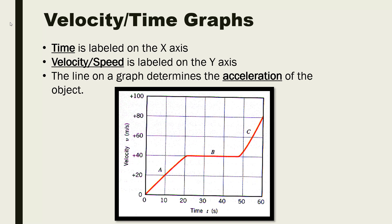Just a reminder: speed is how fast an object is traveling, and velocity is also how fast an object is traveling but it includes directionality. Both can be graphed with a line graph. Let's first start with velocity-time graphs and speed-time graphs — they work the same way.